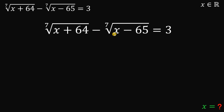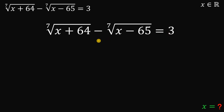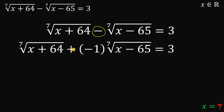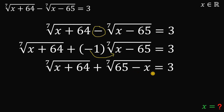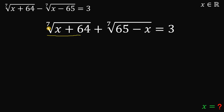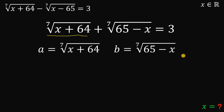To answer this kind of question, we will make the subtraction into an addition. We multiply the second term by negative one — which is legal — and since the 7th root of negative one is still negative one, we can put it inside the 7th root. This gives us: 7th root of (x + 64) plus 7th root of (65 - x) equals 3. We let a equal the 7th root of (x + 64) and b equal the 7th root of (65 - x), so a + b = 3.